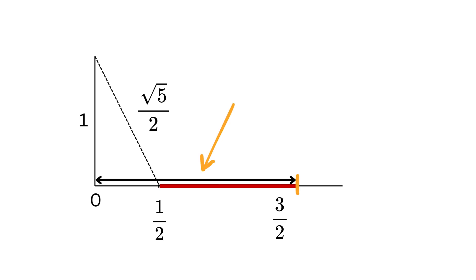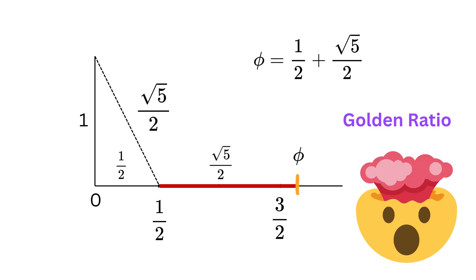What do you think this length will be? Yes, right! It will be half plus square root of five over two, which is none other than the golden ratio or this number.